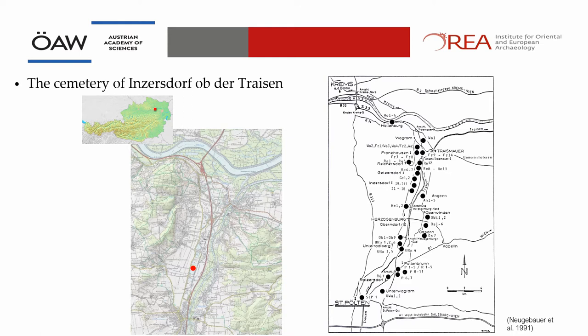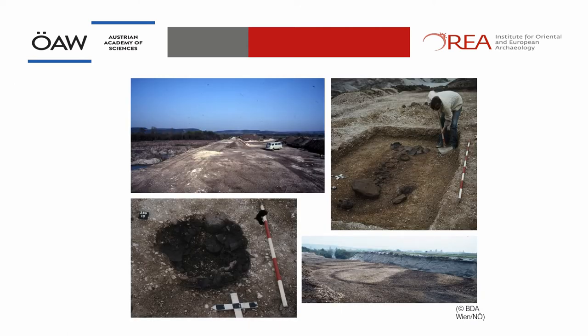To give you a short overview of the cemetery I am working on: it is situated in the lower Treisen Valley close to the Danube confluence. The construction of a motorway there demanded huge amounts of gravel, which resulted in large-scale rescue excavation, and led the Treisen Valley to become one of the best archaeologically investigated areas in Austria. You can see all the sites that have been uncovered. The Heritage Department conducted excavations there.